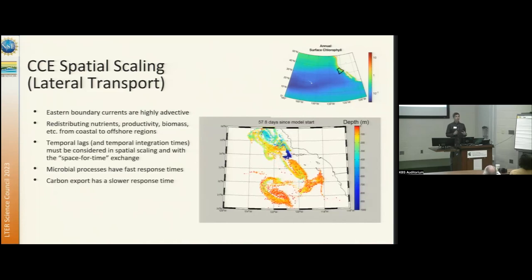And when thinking about how advective our ecosystem is, we need to consider the temporal lags between a response and the driver. When we think about our microbial processes, our microbial processes are relatively fast. The generation times of our phytoplankton are on the order of days. Same thing for our bacterial populations. So we see rapid turnover. And so when we're measuring our microbial communities and comparing them to the driver of nutrient supply, we see strong correlations.